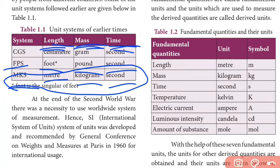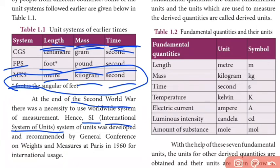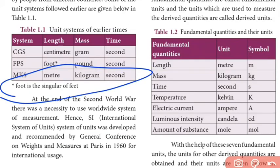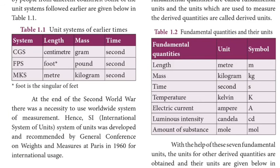The MKS system is also called the SI system — the International System of Units. This system was proposed by the General Conference on Weights and Measures at Paris in 1960, after the Second World War, to establish one standard system of units used worldwide.